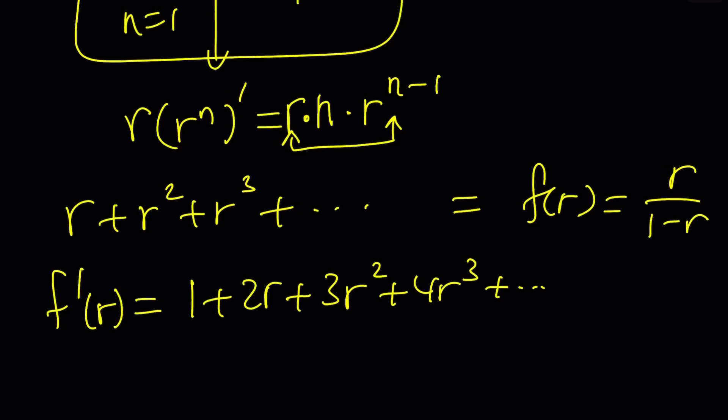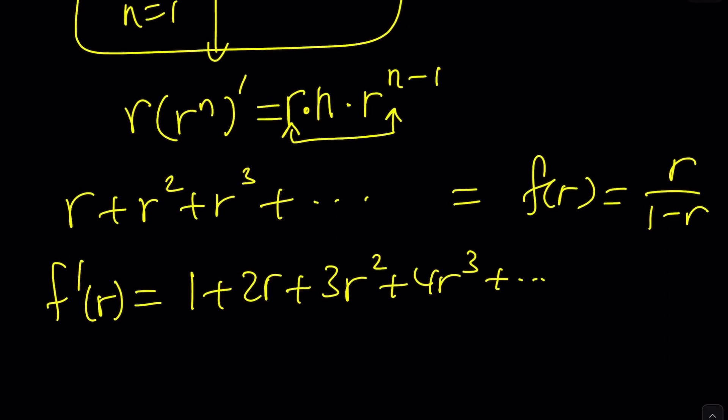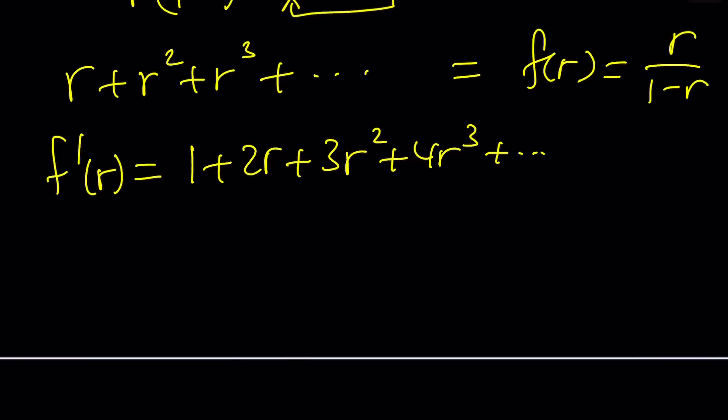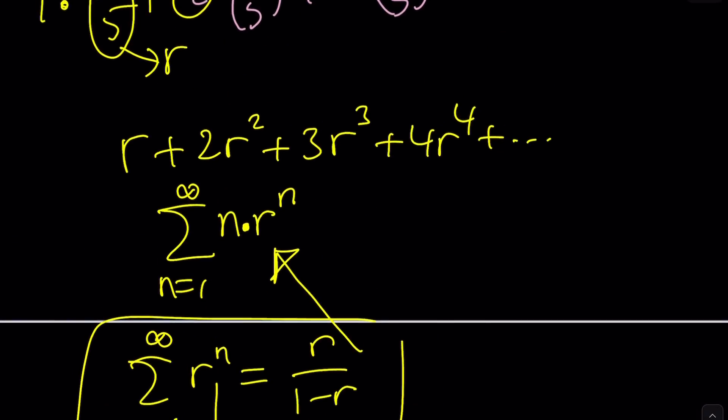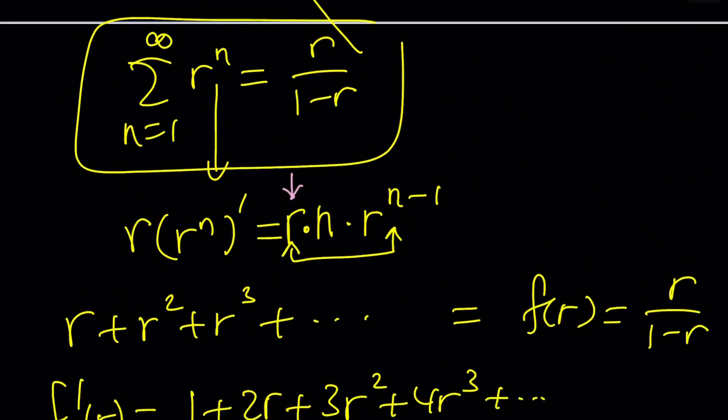f of r is r over 1 minus r, and then f prime at r is going to be 1 plus 2r plus 3r squared plus 4r cubed, and so on and so forth. Is this our sum? Well, we had r plus 2r squared. We don't have that exactly. So what we should do is differentiate this. If I had 1 plus r plus r squared plus r cubed and differentiated it, I would be getting 1 plus 2r plus 3r squared. Same thing, it wouldn't matter because the derivative of 1 is 0.